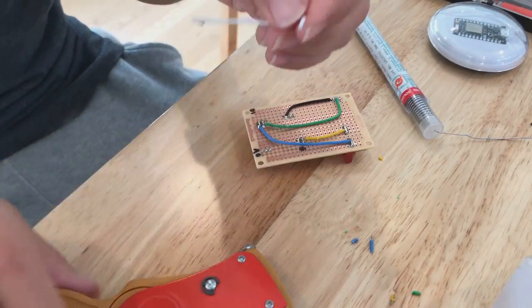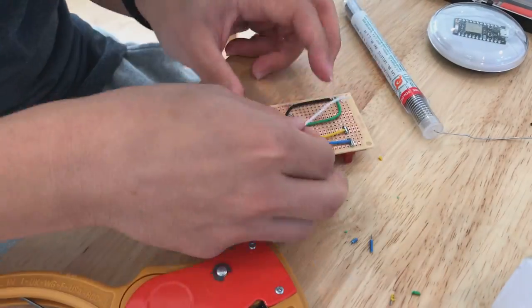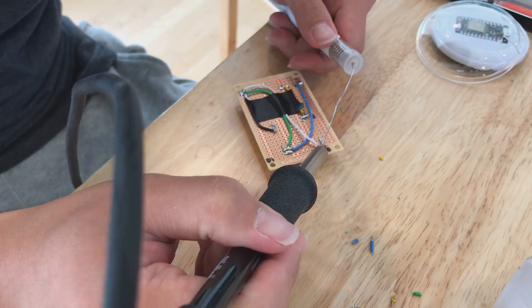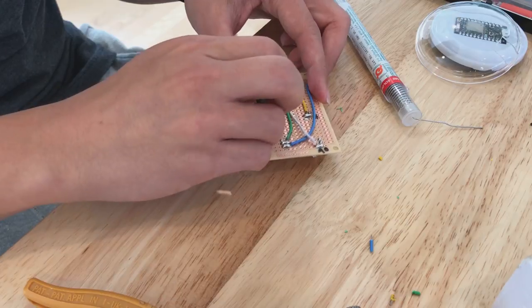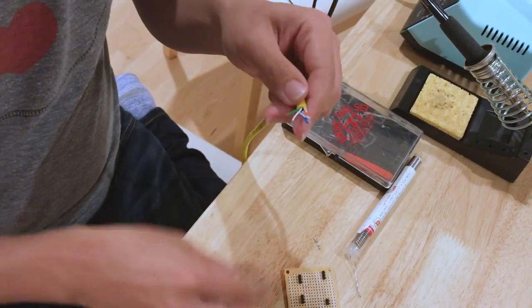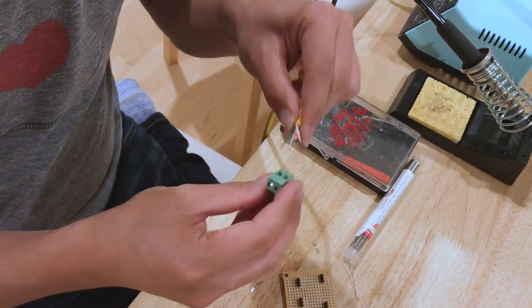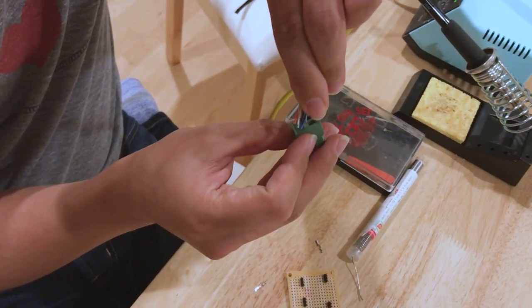To make the wiring a little nicer and less likely to pop out, we're going to create a little board that plugs into the bottom of the internet button. For the connection to the relay, we scrounged up an old Ethernet cable and we're just going to use one of the pairs inside. A bit overkill, I guess, but it works.